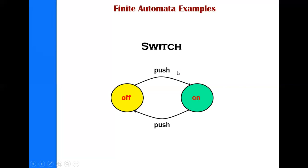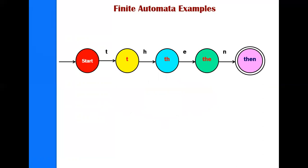You should also know where finite automata is used. Almost all of you have Googled things on the internet. When you type 'AUT' or something partial, many different combinations of strings and sentences appear as suggestions. The machine or system is trying to match what you have input with different strings. This is one example of finite automata — the virtual machine is trying to match your input with different combinations, and whichever matches gives the successful output.